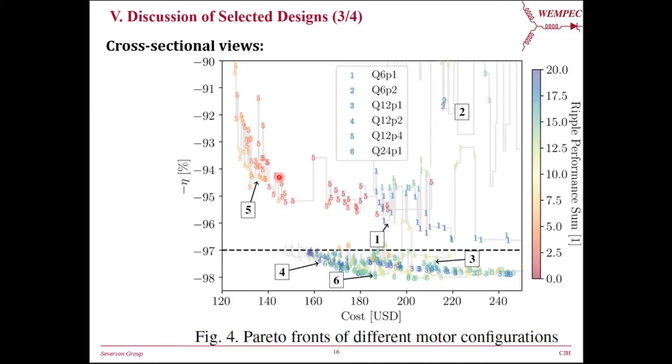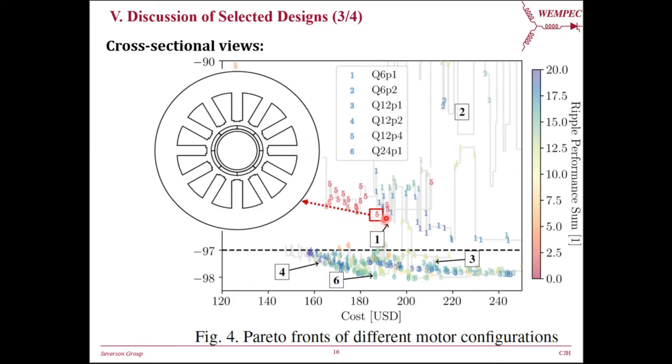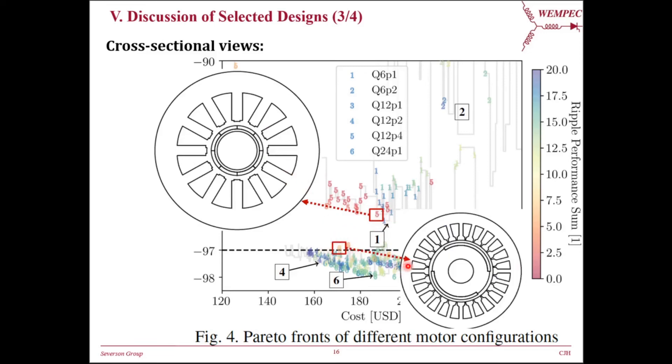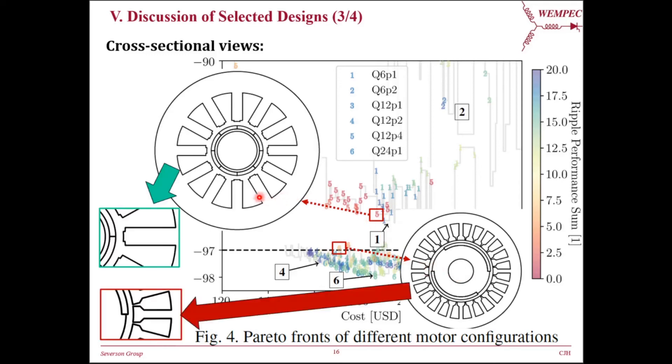Finally, let's put performance metrics aside and take a look at the cross-sectional view of the two preferred designs. This is the selected Q12P4 design, and this is the selected Q24P1 design. Note that these two designs have very distinct stator tooth shapes. The Q12P4 design has a very wide slot shape, while the Q24P1 design has an almost closed slot shape. Why do different tooth-tip shapes happen for different slot-pole combinations?